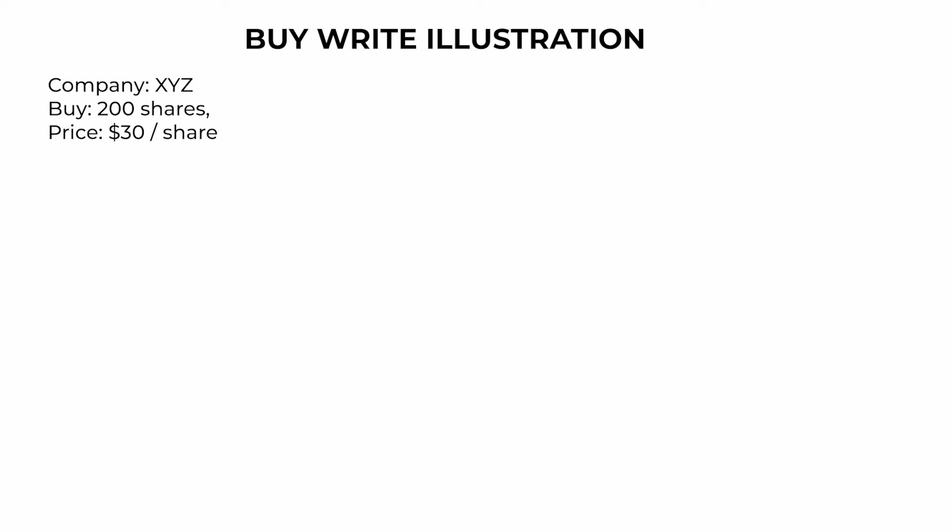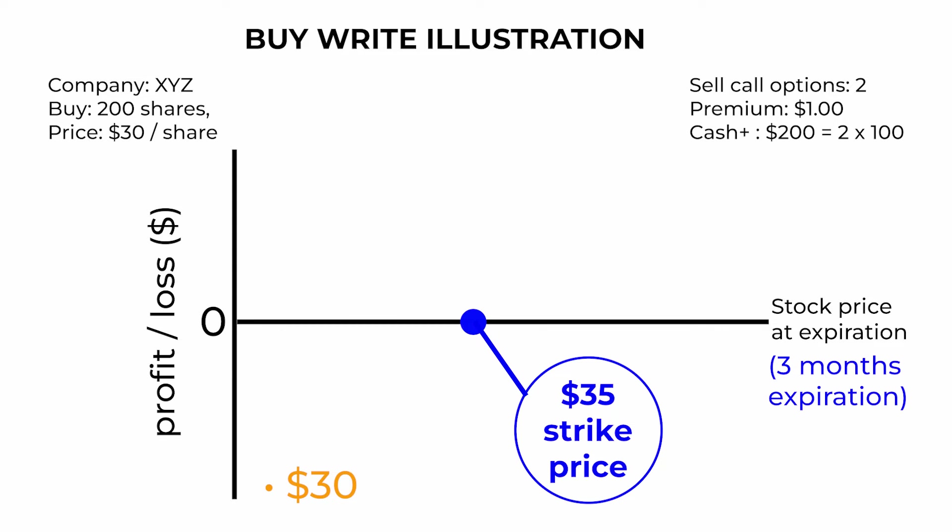The buy right strategy is essentially the same as a covered call — you buy the stock and write or sell the call option simultaneously. For example, let's say you want to invest in XYZ company trading at $30 per share. You buy 200 shares of XYZ for a total investment of $6,000. At the same time, you sell two call option contracts for XYZ with a strike price of $35 and an expiration date three months away.